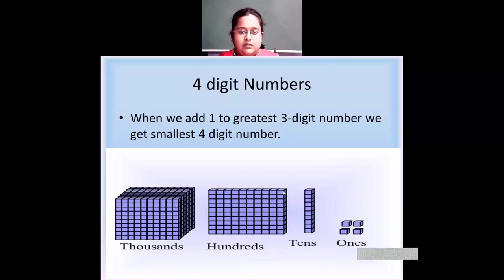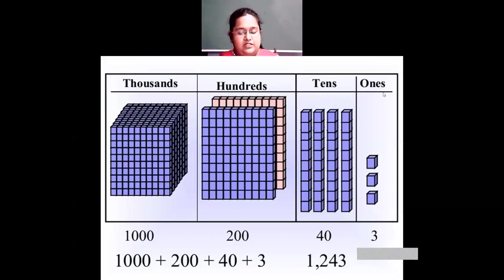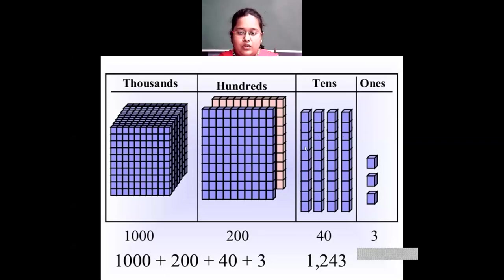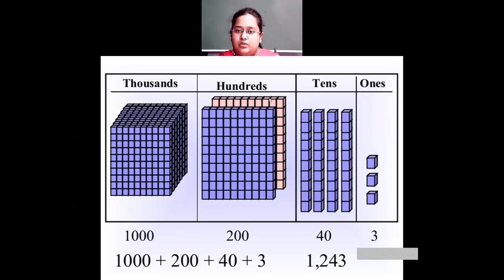Let's see some more numbers. Starting with ones: I have three ones, so I write three. Coming to tens, I have four towers of tens, so I have four tens — that is forty. Then I have two squares of hundreds, so I have two hundreds. And I have one thousand cube — that is one thousand. So the number is one thousand plus two hundred plus forty plus three — that is one thousand two hundred and forty-three.